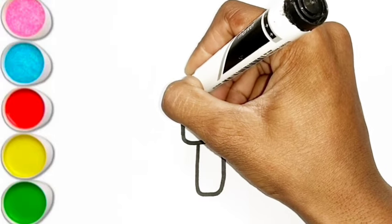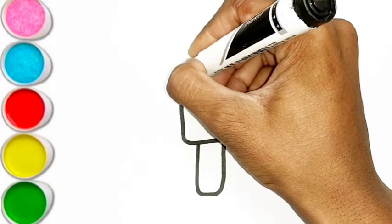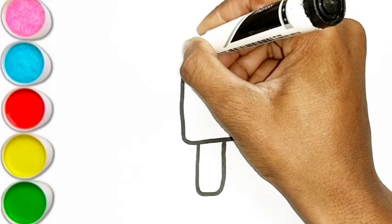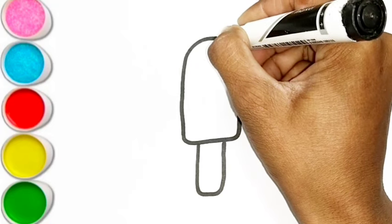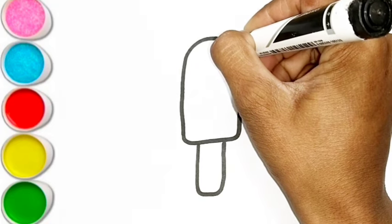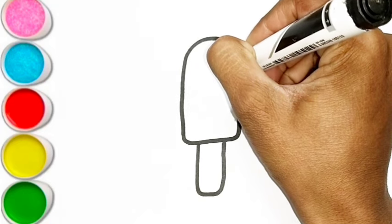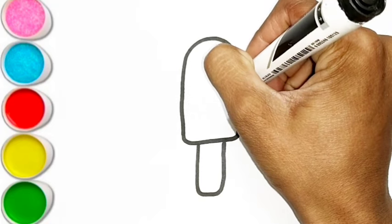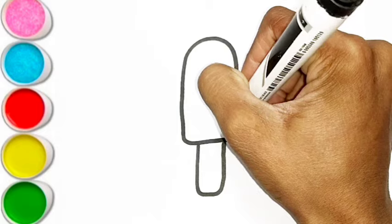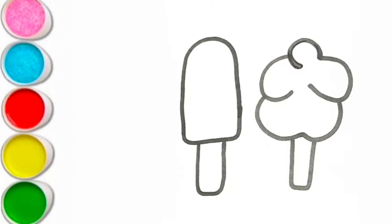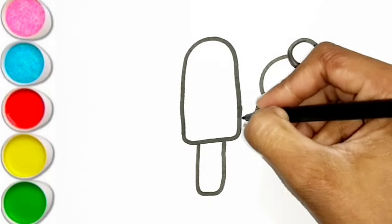M is for mat. M, m, mat. N is for net. N, n, net. O is for orange. O, o, orange.